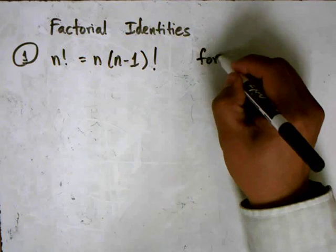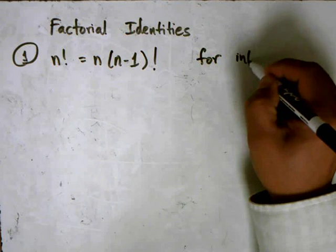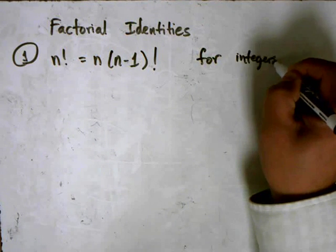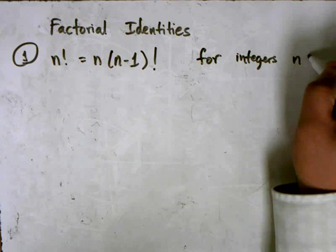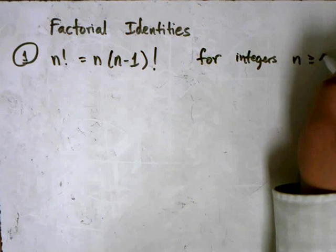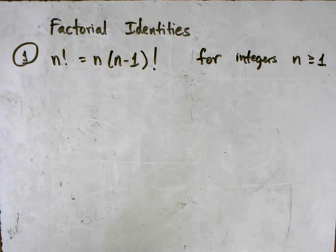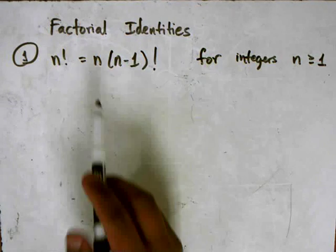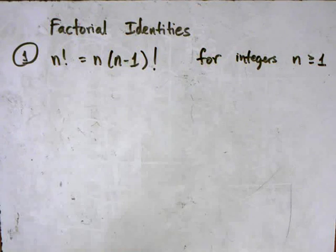And it says that for integers n greater than or equal to 1, n factorial is equal to n times n minus 1 quantity factorial.